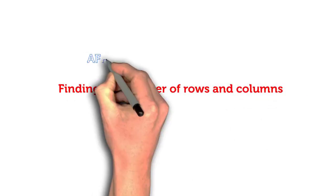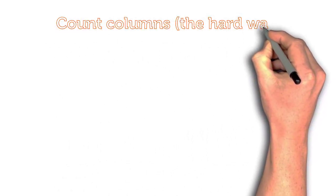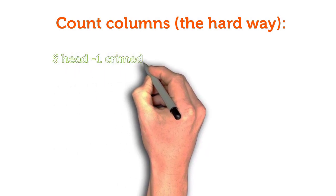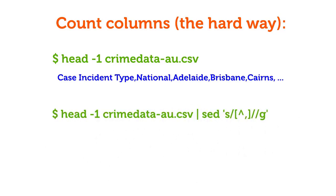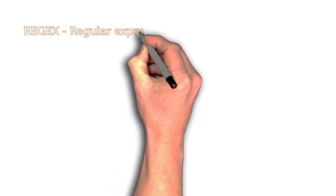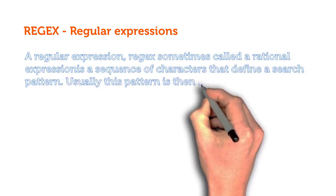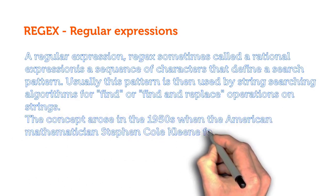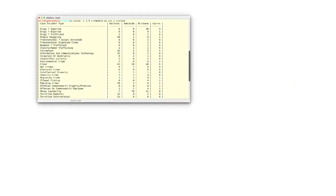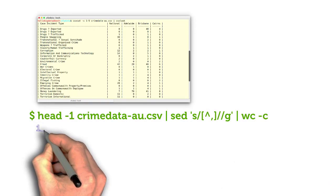Finding the number of rows and columns — there are two ways to do this. The hard way: counting columns. Step 1: first get only the first row using the head command. Step 2: next use sed to remove everything except commas, using a regular expression pattern. See the tutorials section for more details on regular expressions. Step 3: finally, simply use the wc command to count the number of characters (commas). Let's see the command in practice.